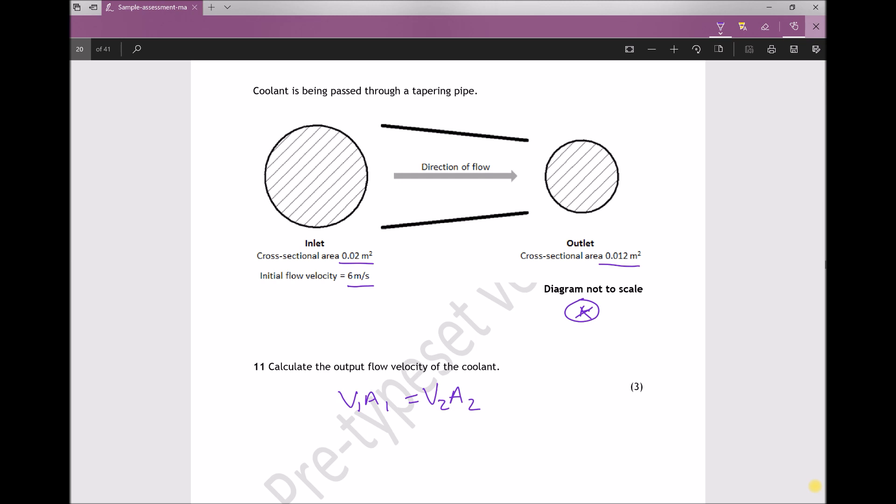So let's have a look at what we've got here. We've got the inlet to the pipe which we're going to call position 1, and we've got the outlet to the pipe which we're going to call position 2. We're given A1, which is 0.02 metres squared, and we're also given V1, which is 6 metres per second. We're given A2, 0.012 metres squared, and we're asked to calculate V2, the output flow velocity of the coolant.